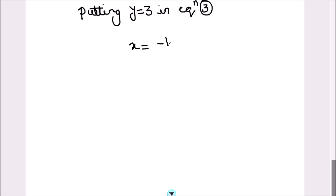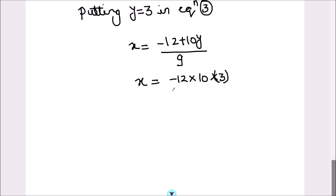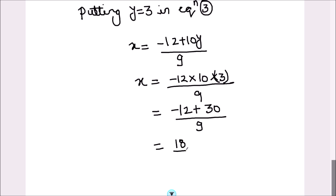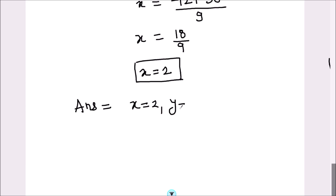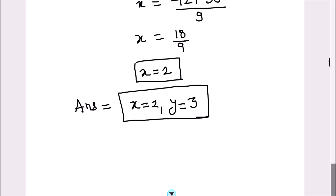So x equals minus 12 plus 10y upon 9, which gives x equals minus 12 plus 10 times 3 divided by 9. That is negative 12 plus 30 divided by 9, and negative 12 plus 30 is 18. So 18 divided by 9 gives x equals 2. Our final answer is x equals 2 and y equals 3, obtained from the system of equations using the substitution method.